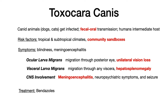You can also have visceral larva migrans, because the larva migrates through the viscera. When it does that, it can cause infections in various hollow or solid organs. The big one to watch for on your test is hepatosplenomegaly due to involvement of the liver or spleen, but involvement of the heart and other viscera is also possible. On your exam, ocular larva migrans means look for ocular symptoms; visceral larva migrans means look for visceral symptoms.